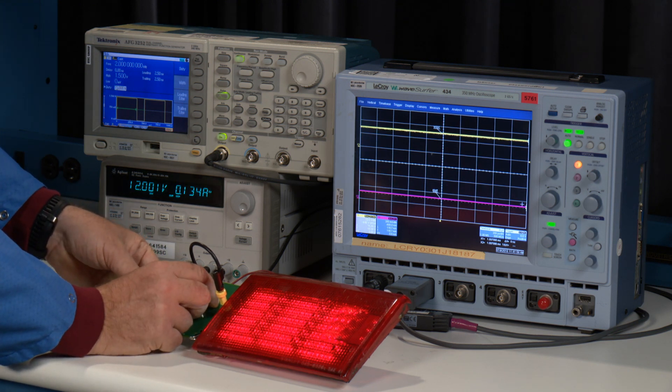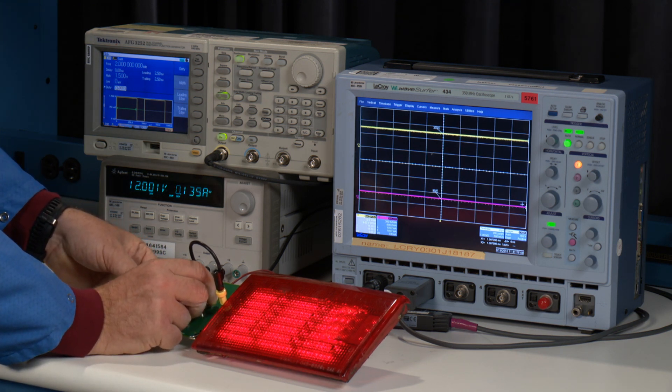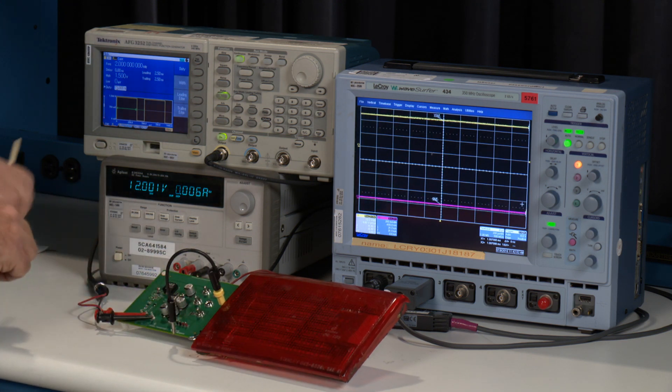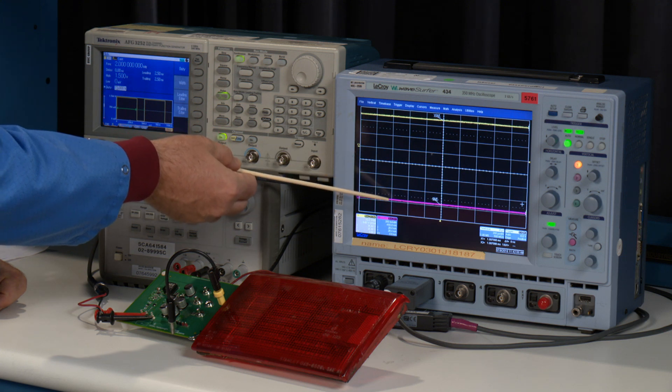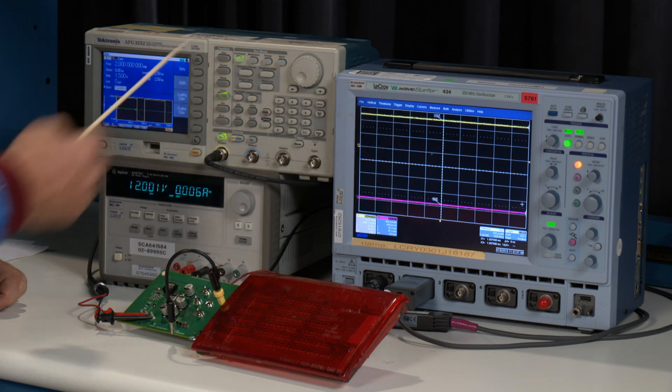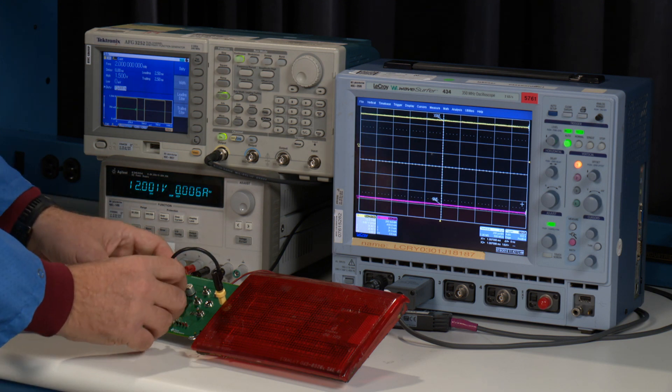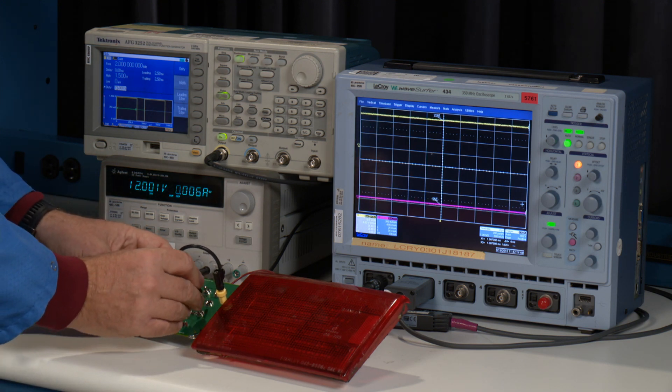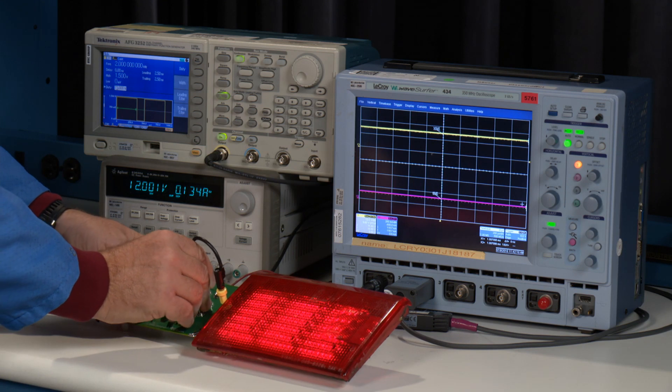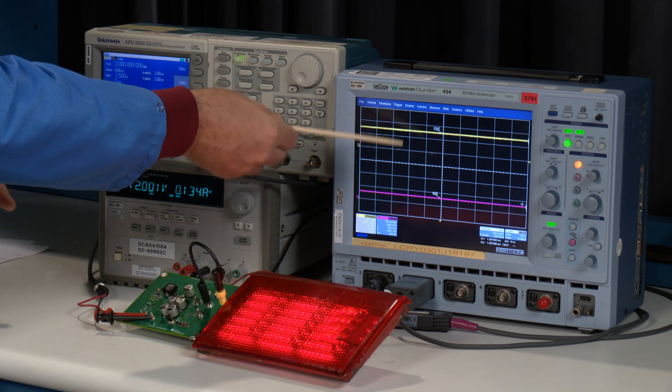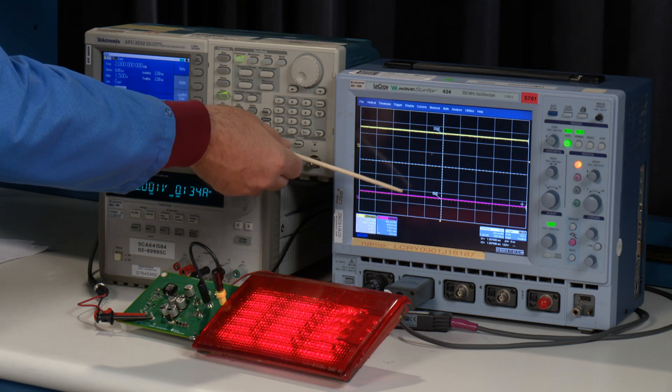So by pulling this lead out here, the LED array will go dark. You can see that the current goes down to zero and the voltage is maintained correctly and doesn't go into fault condition. Then I reconnect the LEDs again. See that the voltage is still maintained and the current comes back nice and clean.